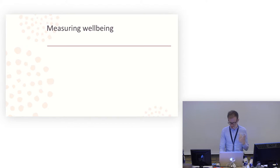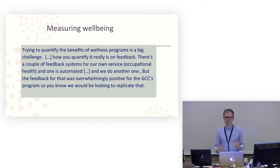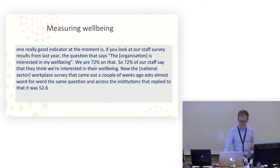And again, just at this point, it's about generating meaning in certain kinds of ways, and actually their health isn't really a very big part of it. I asked them about how they measure well-being, what it kind of means to them. And one of them said, trying to quantify the benefits of wellness programs is a challenge. How you quantify it really is on feedback. So we use a couple of different feedback systems, but the feedback for this was overwhelming positive for this GCC program. So they thought it was good. The feedback was good, so they thought it was successful. Someone else said, one really good indicator at the moment is, if you look at our staff survey last year, the question was, the organization is interested in my well-being. We got 72%. So 72% of our staffs think that we're interested in their well-being. And as they go on to say, the national survey for that sector, the average was 52.6. So they were doing well. So they're managing that emotional relationship. That was a good outcome, not improving health.